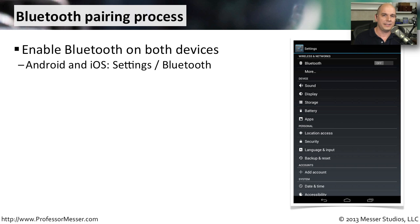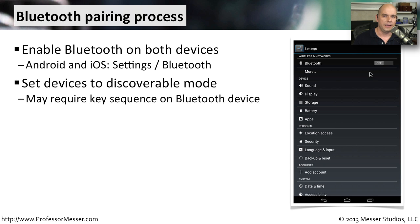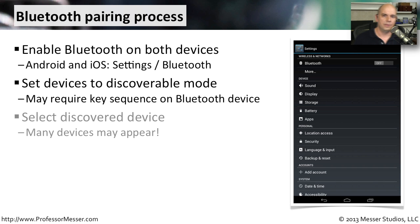You have to go through this pairing process, which requires that you have both devices in your control. Before you can do any pairing, you have to enable or turn on Bluetooth on your mobile device. In both iOS and Android, it's in the settings under Bluetooth, and you simply turn on and enable that Bluetooth functionality. You then put your other devices into discoverable mode. This may happen automatically, or it may require certain key presses or settings. When a device goes into discoverable mode, you should see it pop up on your mobile device, with every Bluetooth discoverable device listed on your screen.